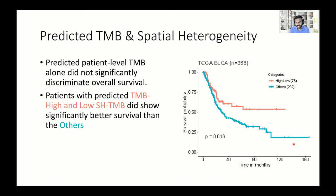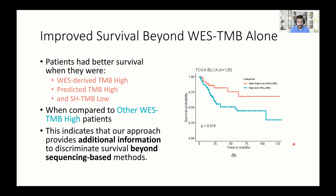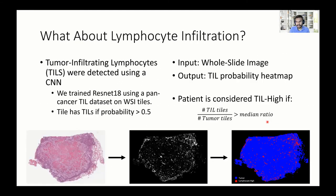How does this compare to sequencing-based TMB? We took only the whole exome sequencing ground truth-derived TMB-high patients and looked at the TMB-predicted high patients with low heterogeneity, compared to the rest. We see a significant difference in survival, indicating that our approach is providing additional information beyond what sequencing-based methods can do alone.